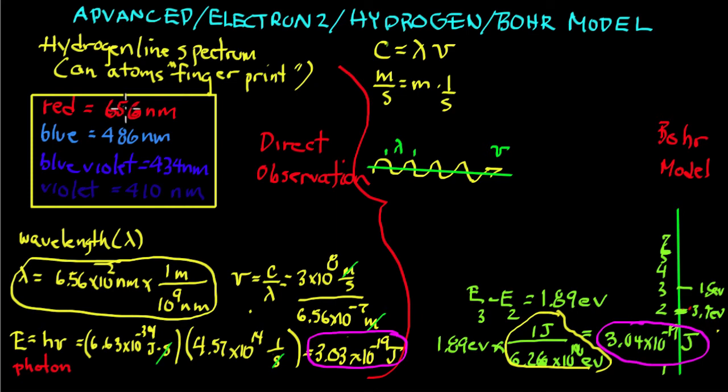This is from the actual red line in the hydrogen spectrum, and here Niels Bohr's model gives us this line.